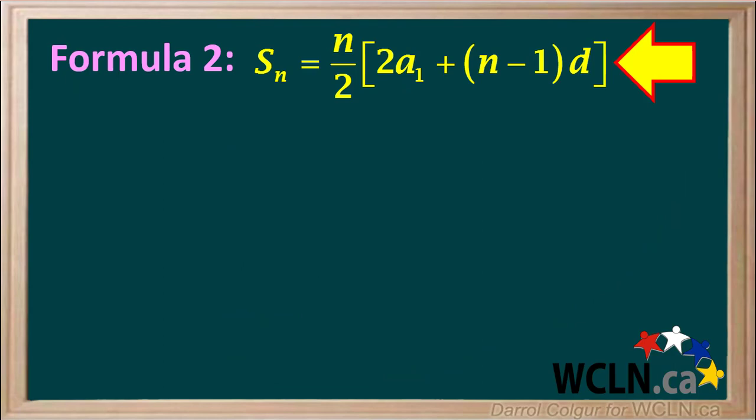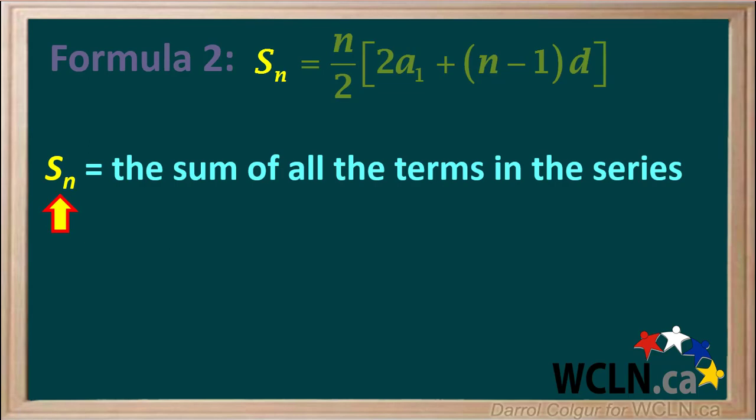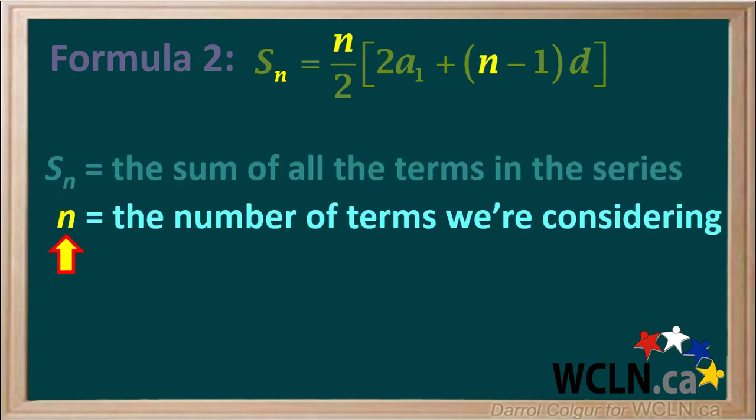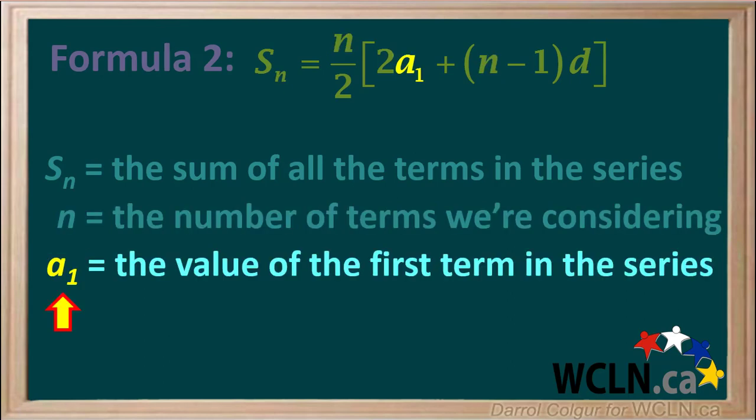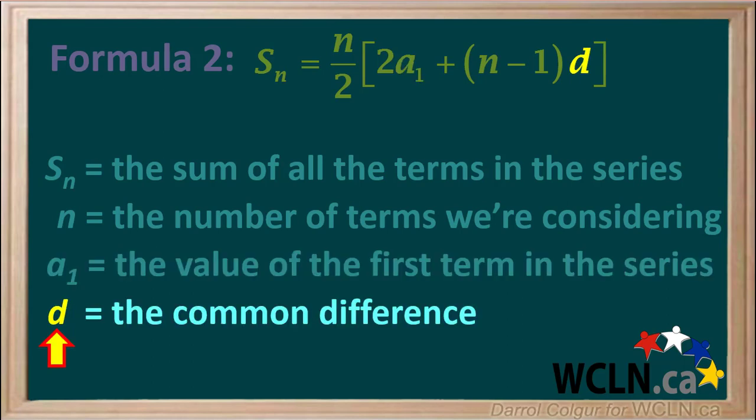Now we'll have a closer look at the second formula, shown here. Like the other formula, Sn is the sum of the terms up to and including the nth term in the series. n is the number of terms we're considering. It could be either all of the numbers in the series, or a specified number of them. A1 is the value of the first term in the series. And D is the common difference, which is the difference between each consecutive term. This is a constant value in an arithmetic series.